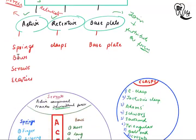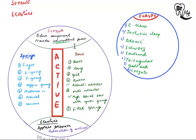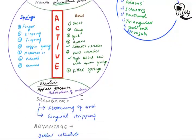Under active components, you have springs, bows, screws, and elastics. Springs include the finger spring, Z-spring, T-spring, coffin spring, mattress spring, helical spring, and canine retractors. Bows include the short bow, long bow, split bow, reverse bow, Roberts retractor, Mills retractor, high labial bow with apron springs, and fitted springs. Screws are also active components providing intermittent forces. Elastics apply pressure and are mainly used for retraction of anteriors, though they can cause flattening of the arch and gingival stripping.